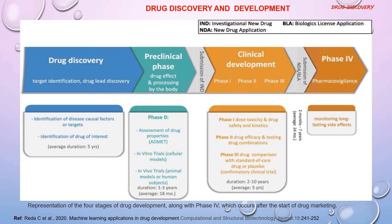This is followed by the preclinical phase, also called phase 0. It includes characterization of the drug, its pharmacokinetic properties — ADME — and in vitro and in vivo trials to check the therapeutic response of the lead compound. Next is the clinical development phase, which includes three phases: phase 1, phase 2, and phase 3. Each phase involves an array of tests to check dosage, toxicity, and efficacy. Phase 1 covers dosage, dose toxicity, short-lived side effects, and kinetic relationships. Phase 2 determines drug performance, and phase 3 compares the molecule against the standard of care.